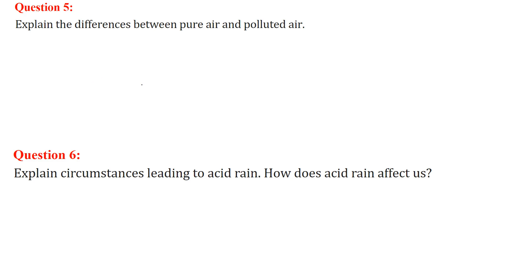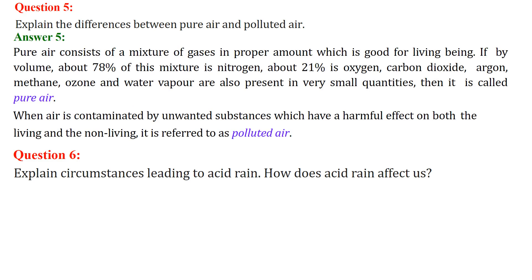Explain the difference between pure water and polluted water. Pure water has elements which are in proper order and proper percentages. Pure air is a mixture of gases in proper amounts which is good for living beings — 78% nitrogen, 21% oxygen, and carbon dioxide, argon, methane, ozone, and water vapor in small quantities. This is known as pure air. When it is contaminated with any unwanted substance that may be harmful to living as well as non-living beings, this is referred to as polluted water.